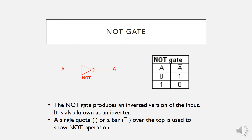Here is the simplest gate among the logic gates, which we call the NOT gate. We have input A and the inverse of A, sometimes called A-bar or A-complement — that's why you see a bar on top of A. This NOT gate is also called an inverter.